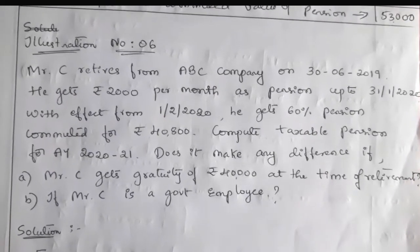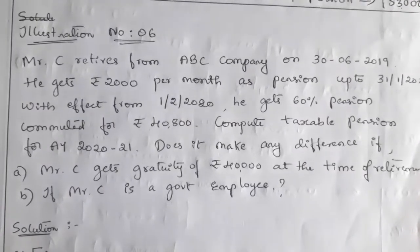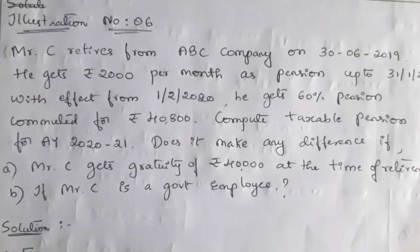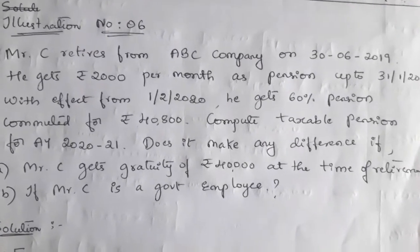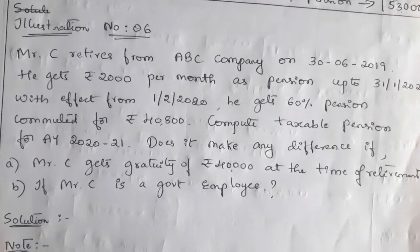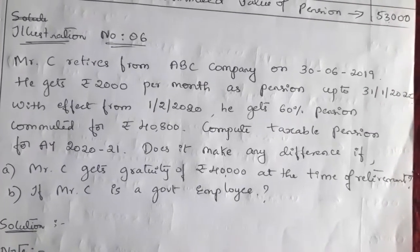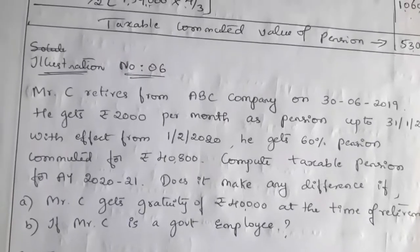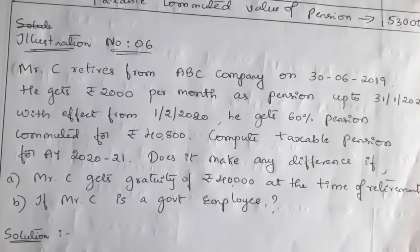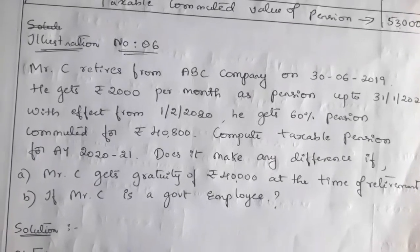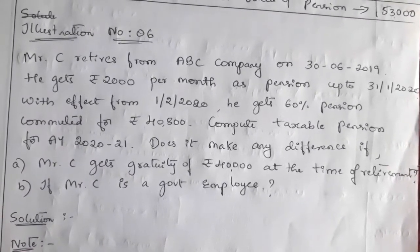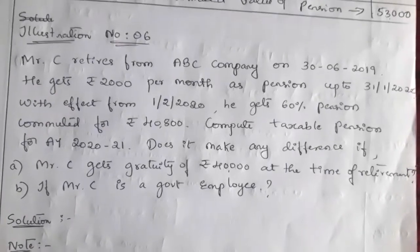Hello students, today we will learn illustration number six relating to the computation of taxable pension. The question: Mr. C retires from ABC Company on 30th June 2019. He gets ₹2000 per month as pension up to 31st January 2020. With effect from 1st February 2020, he gets 60% pension commuted for ₹40,800. Compute the taxable pension for assessment year 2020-21. Does it make any difference if Mr. C gets gratuity of ₹40,000 at the time of retirement? Second question: if Mr. C is a government employee.